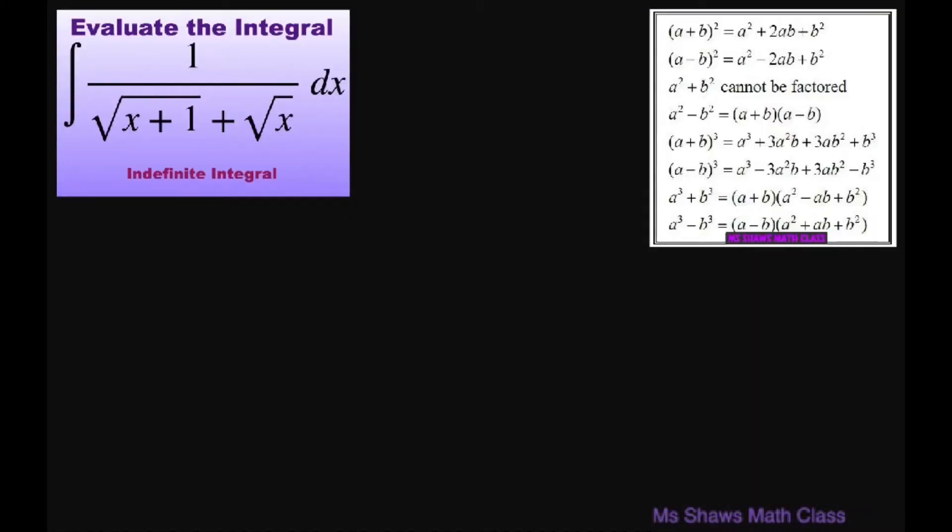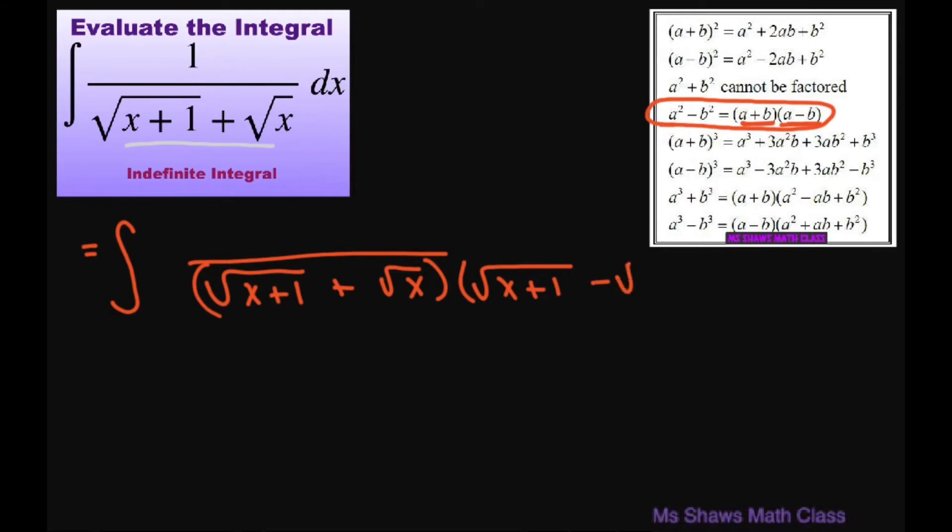So what I want to do is rationalize my denominator by using my difference of squares here. So I'm going to take my integral and take my denominator, square root of x plus 1 plus square root of x, and multiply it by the conjugate. So we have a plus, so we're going to multiply it by a minus b, which is going to be the square root of x plus 1 minus square root of x. Now if I multiply my denominator by this, I also have to multiply my numerator by this.